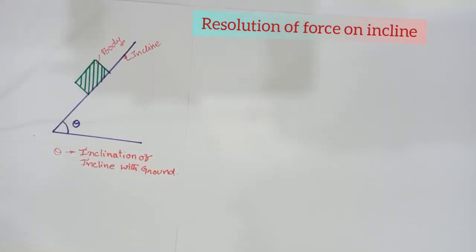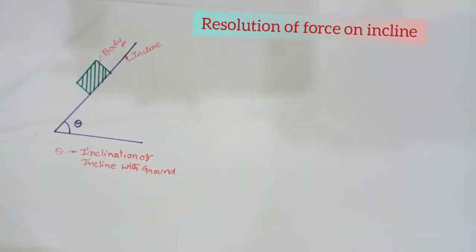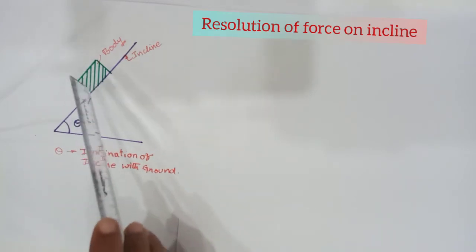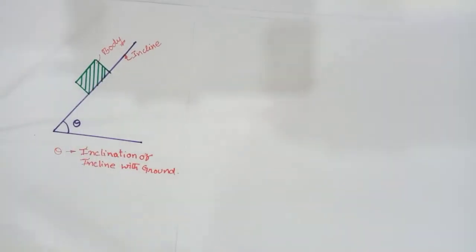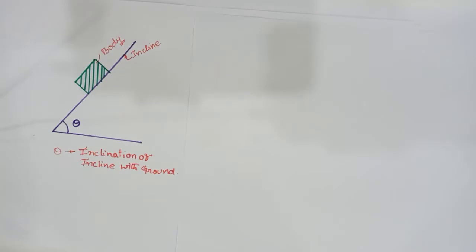Now we will see how to resolve a body on an incline. Here, a body is placed on the incline. The best example for an incline is a ramp. Theta is the inclination of the incline with the ground, and this is the body placed on the incline. We will see how to resolve this body force parallel to the incline as well as perpendicular to the incline.